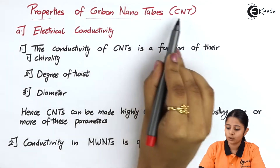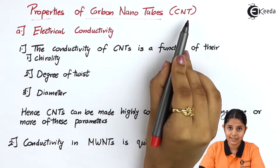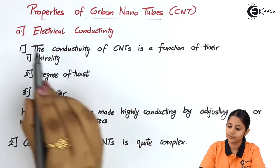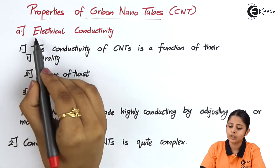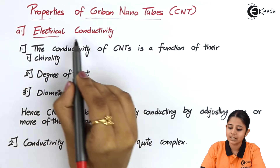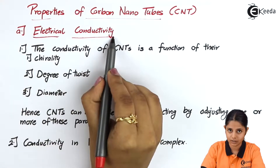Properties of carbon nanotubes, also known as CNT. Let's see the first one, which is electrical conductivity.